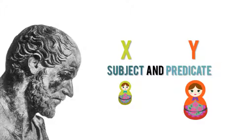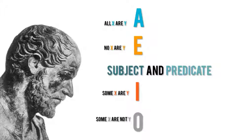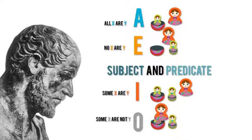Alright. So, going down the list, all the green dolls are in the red dolls. That would be A. E would be none of the green dolls are in the red dolls. Okay. I would be some of the green dolls are in the red dolls. And O would be some of the green dolls are not in the red dolls.